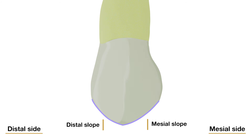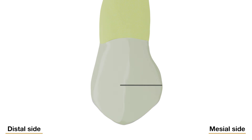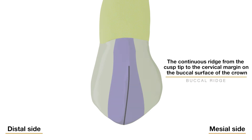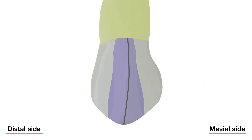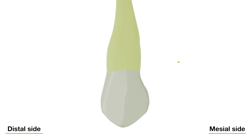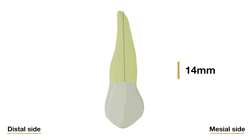The opposite arrangement, where the distal slope is longer than the mesial slope, is true of the maxillary canine. The mesiodistal width of the crown of the maxillary first premolar is 7 mm at its greatest measurement, and the mesiodistal width of the crown at the cervix is about 5 mm. The buccal surface of the crown is convex, showing the strong development of the middle buccal lobe. The continuous ridge from the cusp tip to the cervical margin on the buccal surface is called the buccal ridge. Mesial and distal to the buccal ridge, developmental depressions are seen at the occlusal or middle third, serving as demarcations between the middle buccal lobe and the mesiobuccal and distobuccal lobes. The length of the root is 14 mm, which is 3 to 4 mm shorter than those of the maxillary canine.